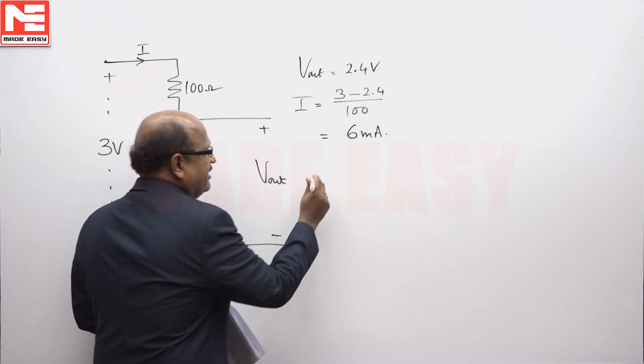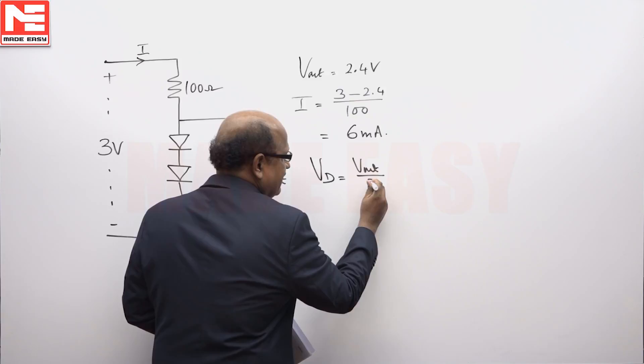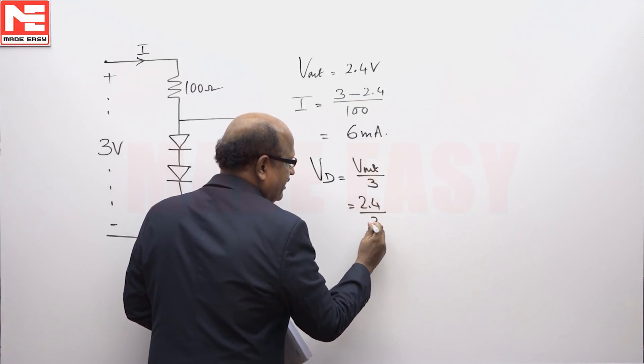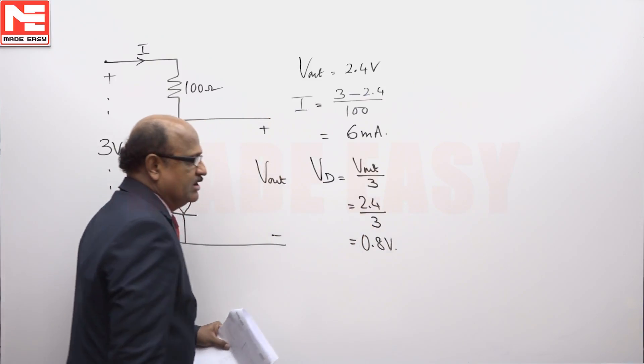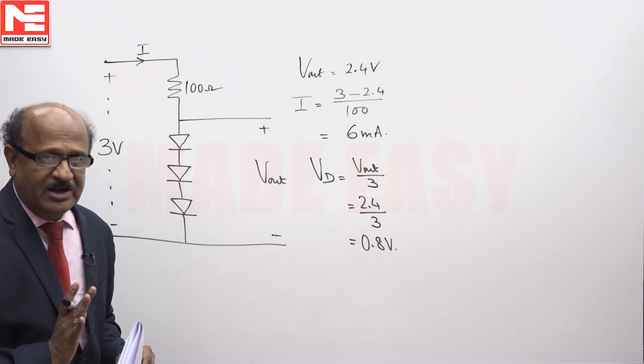What is V_d? V_d will be equal to V_out divided by 3, that means 2.4 volts divided by 3, and that is equal to 0.8 volts. That is the forward voltage across each of the identical diodes.